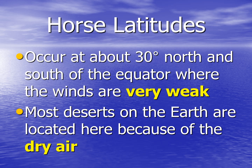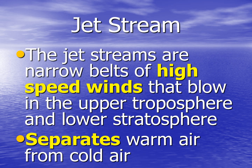Horse latitudes occur at about 30 degrees north and south of the equator, where the winds are very weak. Most deserts on Earth are located here because of all the dry air. Jet streams are narrow belts of high speed winds that blow in the upper troposphere and lower stratosphere. They separate warm air from cold air and can be used by jets to travel a little bit faster.